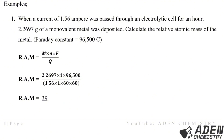For a monovalent metal, the valence is 1, so N = 1. RAM = (M × N × F) / Q = (2.2697 × 1 × 96,500) / (1.56 × 1 × 60 × 60) = 39. RAM has no unit, so the answer is 39.